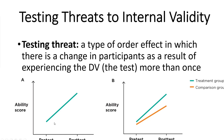To get around testing threats, one of the easiest ways is to include a comparison group to make this a proper experiment. With our comparison group in orange and treatment group in teal, we see that both groups score better the second time around — that improvement is probably due to a testing effect. But our treatment group improves more than the comparison group. So if we can take into account that testing effect, we could still say there was an improvement in the treatment group even after removing the effect of that testing effect.